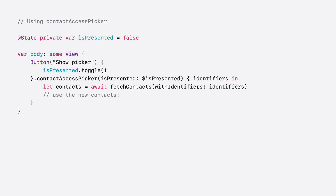Here's an example of how to use it. In this case, I have a simple button that toggles a state bool. Then, I use the Contact Access Picker method to make my button present the picker when the bool is true. Finally, in the callback block, I fetch the contacts my app just gained access to. Just like Contact Access Button, this callback block receives an array of contact identifier strings, so I fetch the contacts the exact same way. Note that the callback block only reports contacts that are newly accessible.